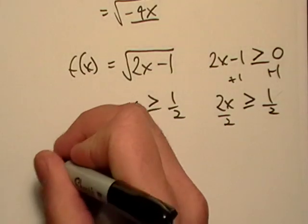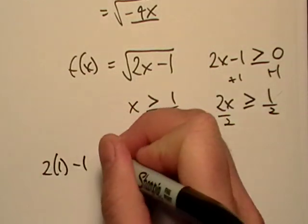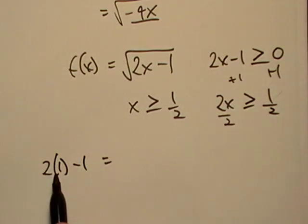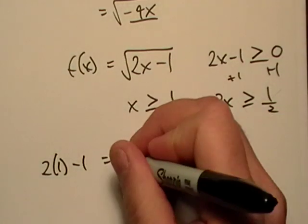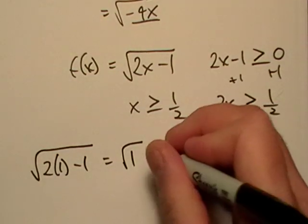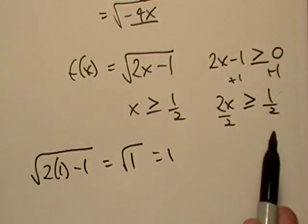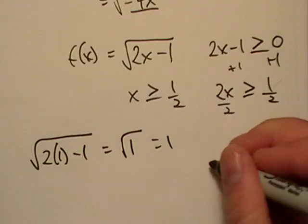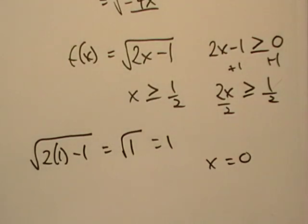So let's put 1 in here. 2 times 1 is 2 minus 1 is 1, and if we take the square root of that, everything's fine. It's just 1. Now let's go less than that. Let's just say x is equal to 0.